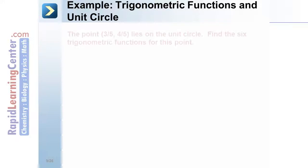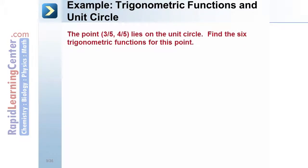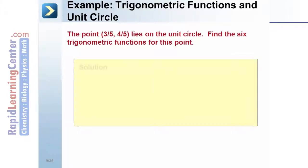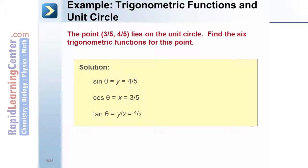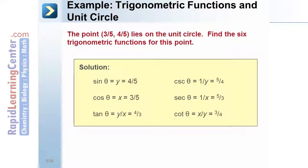The point (3/5, 4/5) lies on the unit circle. Find the six trigonometric function values for this point. Solution: sine of theta is 4/5, cosine of theta is 3/5, tangent of theta is 4/3, cosecant of theta is 1/(4/5), secant of theta is 1/(3/5), and cotangent of theta is 3/4.